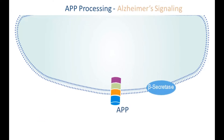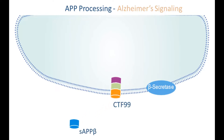Alternatively, in an Alzheimer's brain, an enzyme called beta secretase acts on APP and cleaves it into secreted APP beta, also called SAPP beta, and a 99 amino acid long membrane-bound C terminal fragment, called CTF99.